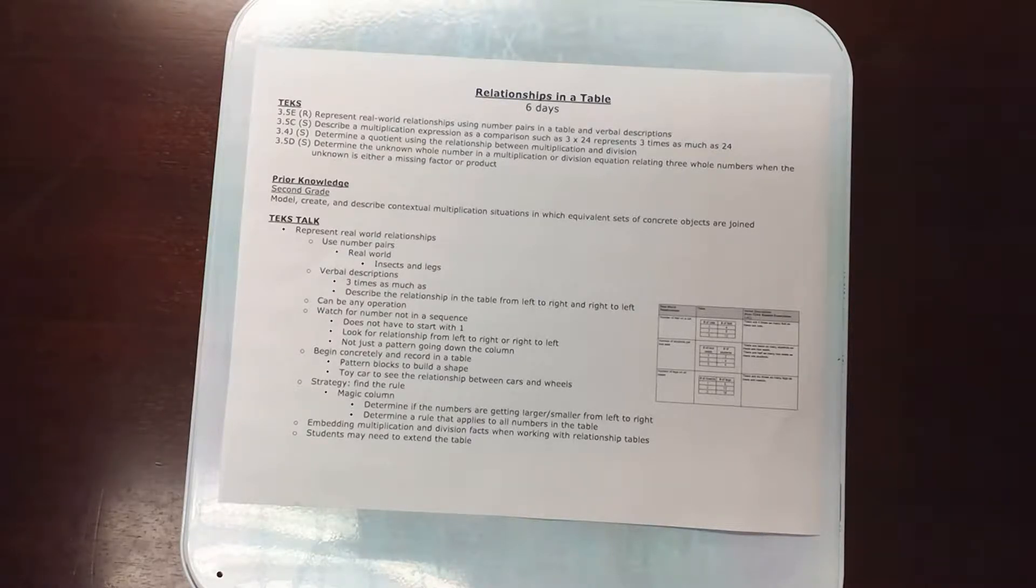Really the focus of these six days is 3.5 E. That is your readiness standard and it talks about students needing to be able to represent real-world relationships using number pairs in a table and verbal descriptions. Those verbal descriptions is where TEKS 3.5 C comes in because it talks about describing that multiplication expression as a comparison.